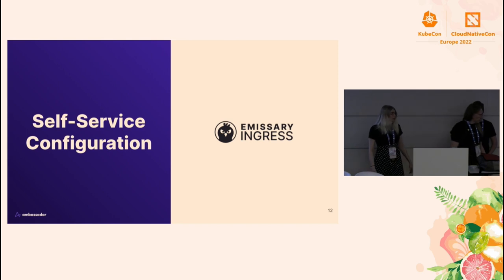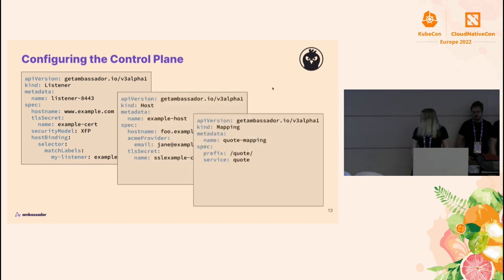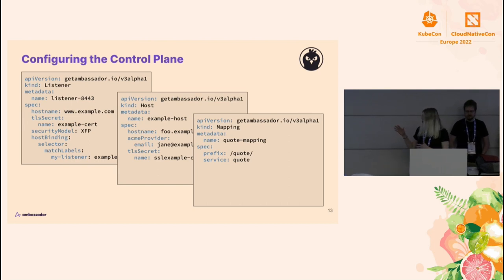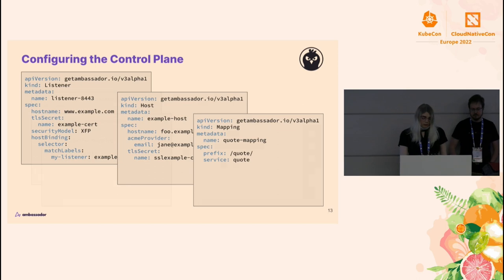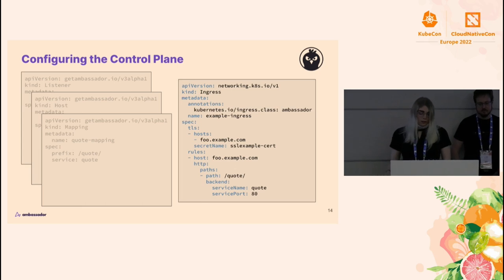Emissary Ingress supports self-service configuration. What does that really mean for the end developers? Here's an example of some of the getambassador.io resources used to configure Emissary Ingress. Note how we've separated them out based on distinct function — each resource is generally focusing on what you're going to be doing at any given time. These three resources are only about 10 or so lines each, yet they can result in an Envoy config that's easily hundreds of lines long. You can also configure Emissary Ingress using the Ingress resources if needed, but we think the best way is using the getambassador.io resources.